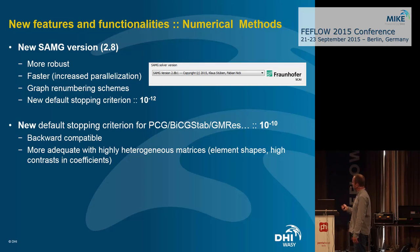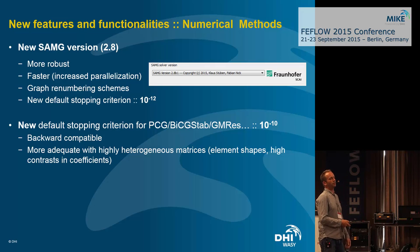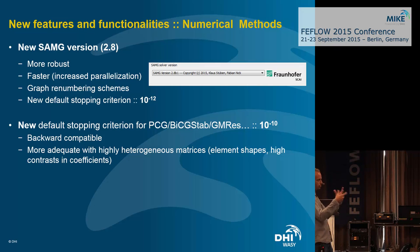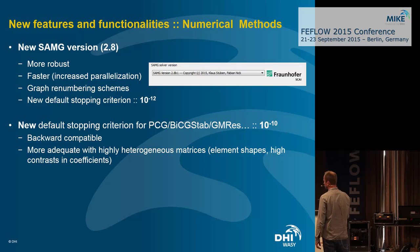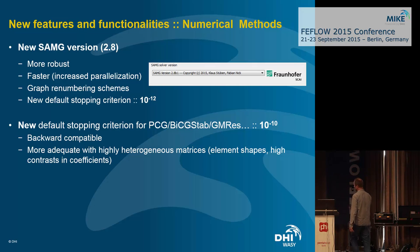We have a new SAMG version — tests show it is definitely more robust and faster, with increased parallelization plus inside graph renumbering schemes to reduce the bandwidth of matrices. We also drastically lowered the defaults for the termination criterion of the solvers, because with mixed meshes and more contrast we have seen — thanks to our customers — that problems really call for a lowered termination criterion. Backward compatibility is maintained so existing FEM files will still run with previous norms.